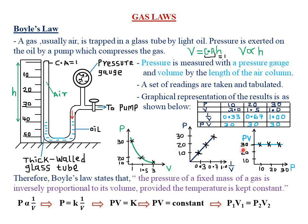You can be asked to sketch any of these graphs. From the first graph of pressure against volume, when pressure is maximum the volume is minimum, and when pressure is minimum the volume becomes maximum — they are inversely proportional. Therefore Boyle's Law states that the pressure of a fixed mass of a gas is inversely proportional to its volume, provided that temperature is kept constant.